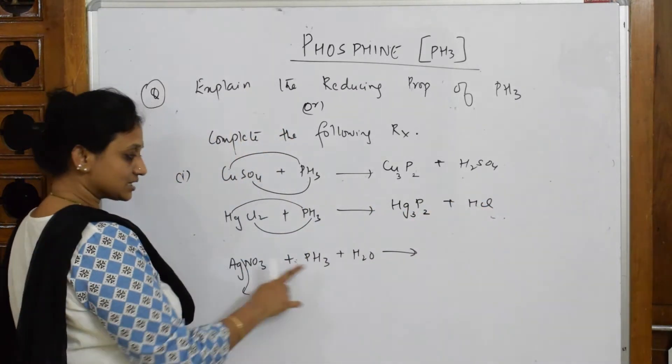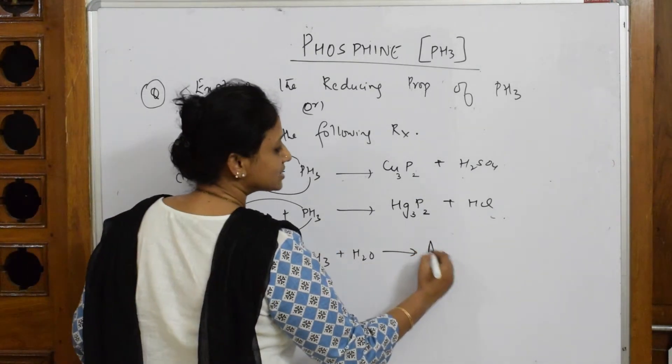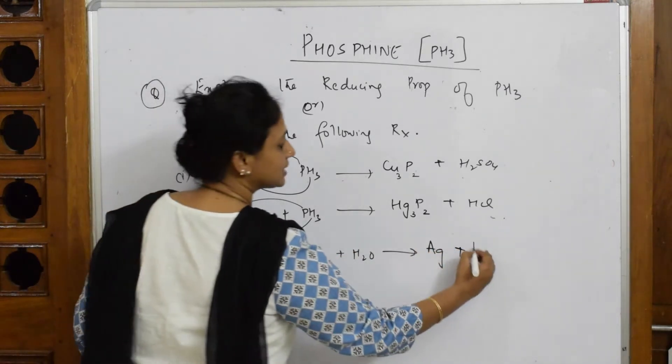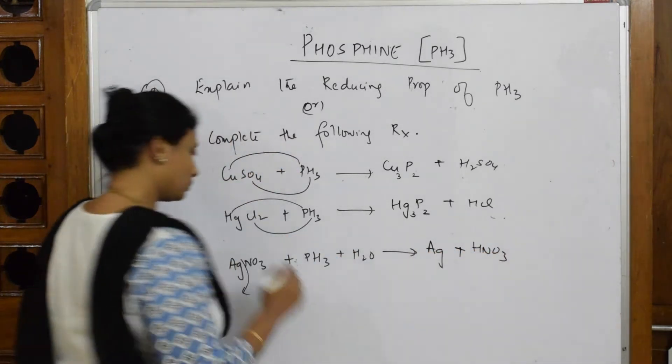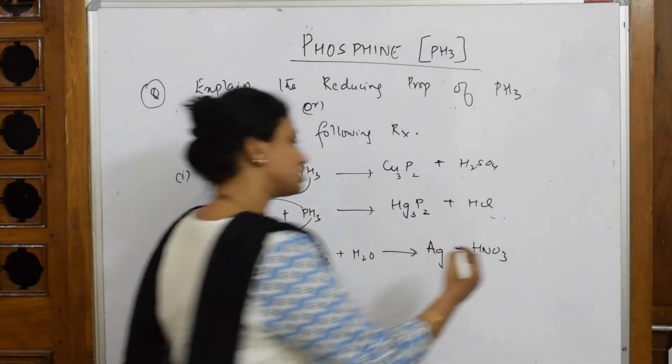Now, when I have to write this, being a reducing agent, it is going to precipitate out silver from silver nitrate. You get silver out. HNO3 is left out, nitric acid. And the leftover, there is still phosphorus, isn't it? This comes out as H3PO3.